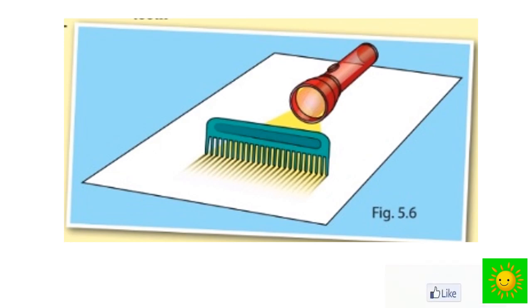Direct the torch towards the comb and light it up. You will be able to see the beam of light emitted by the torch and the light rays which travel through the teeth of the comb. Mark those rays on the white paper with a pencil. You will see that rays drawn by you are straight lines. They are considered as light rays.